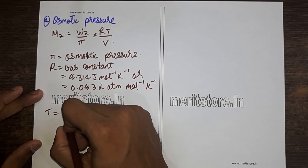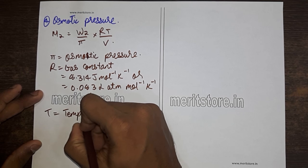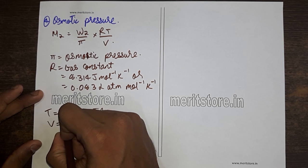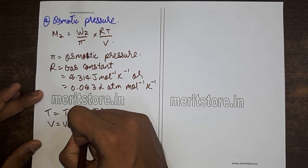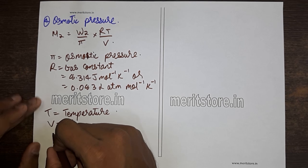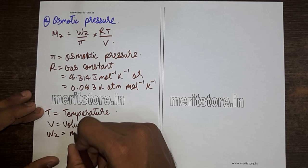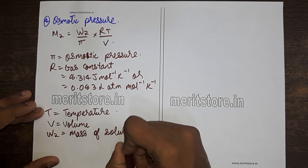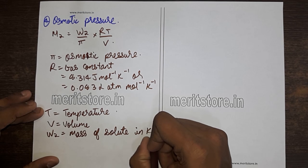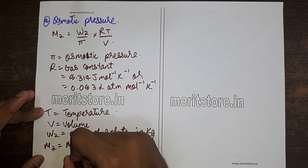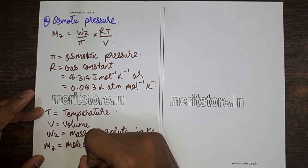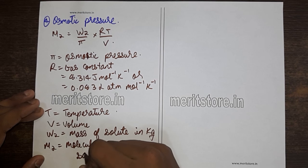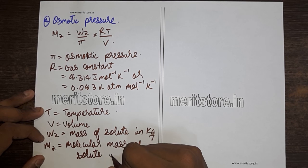T stands for temperature, V is the volume of the solution, w2 is the mass of solute in kg, and m2 is the molecular mass of solute in kg per mole.